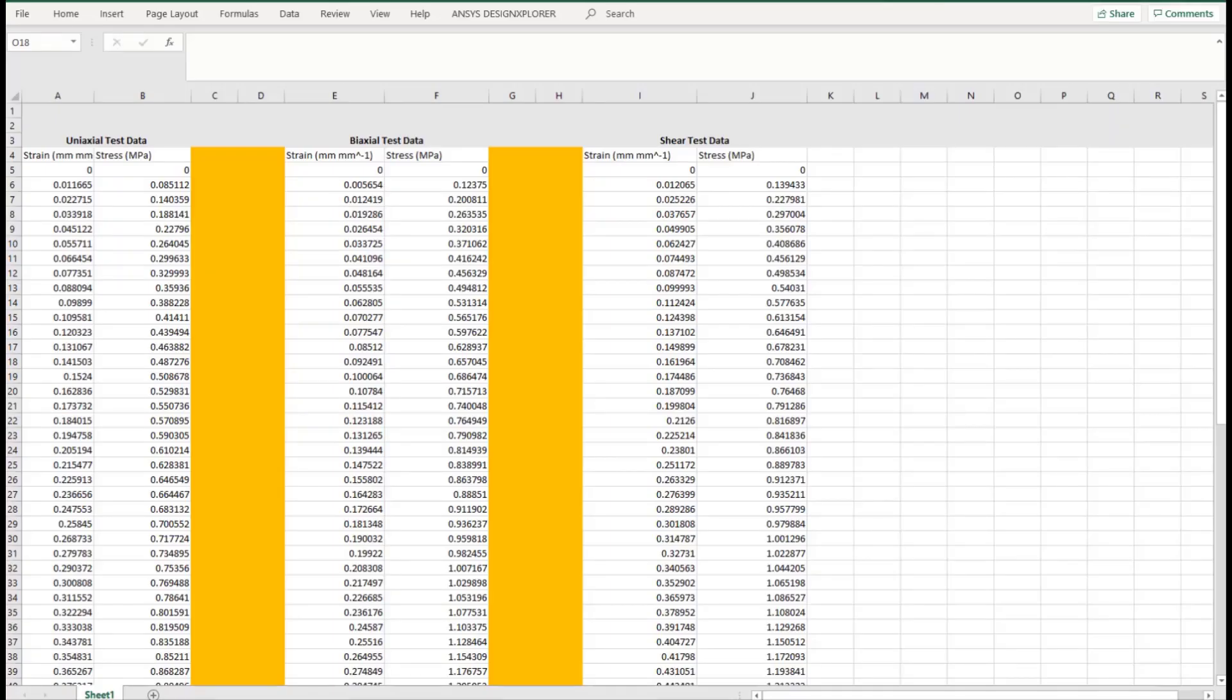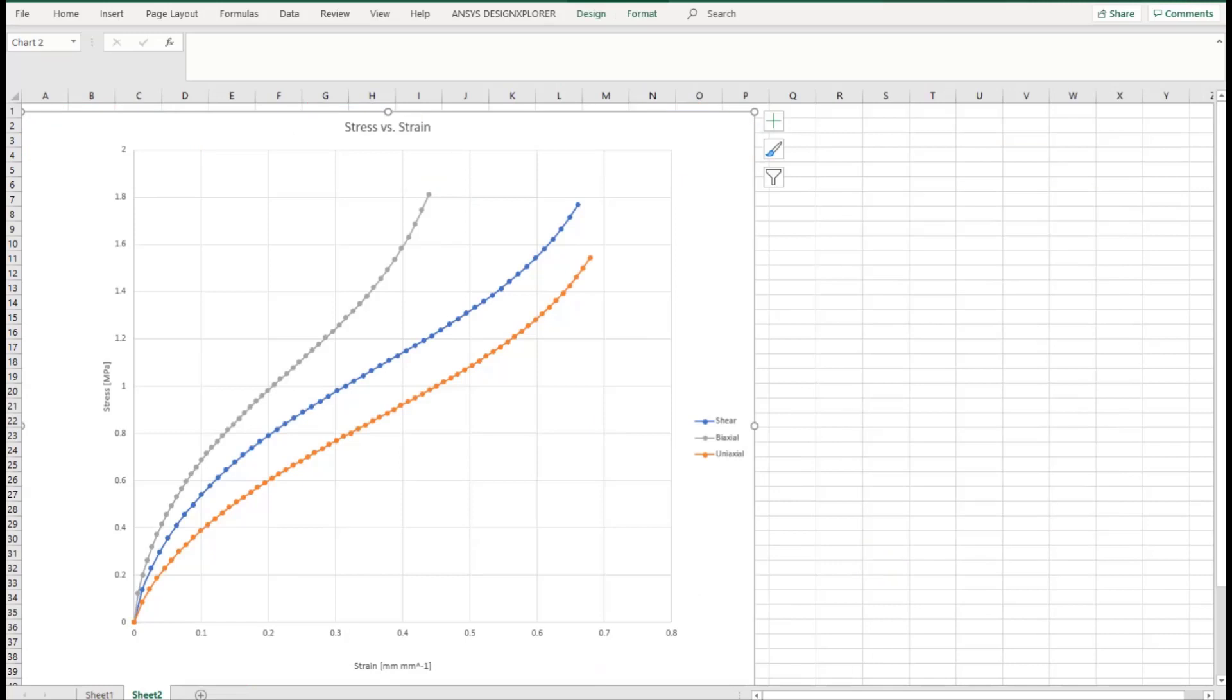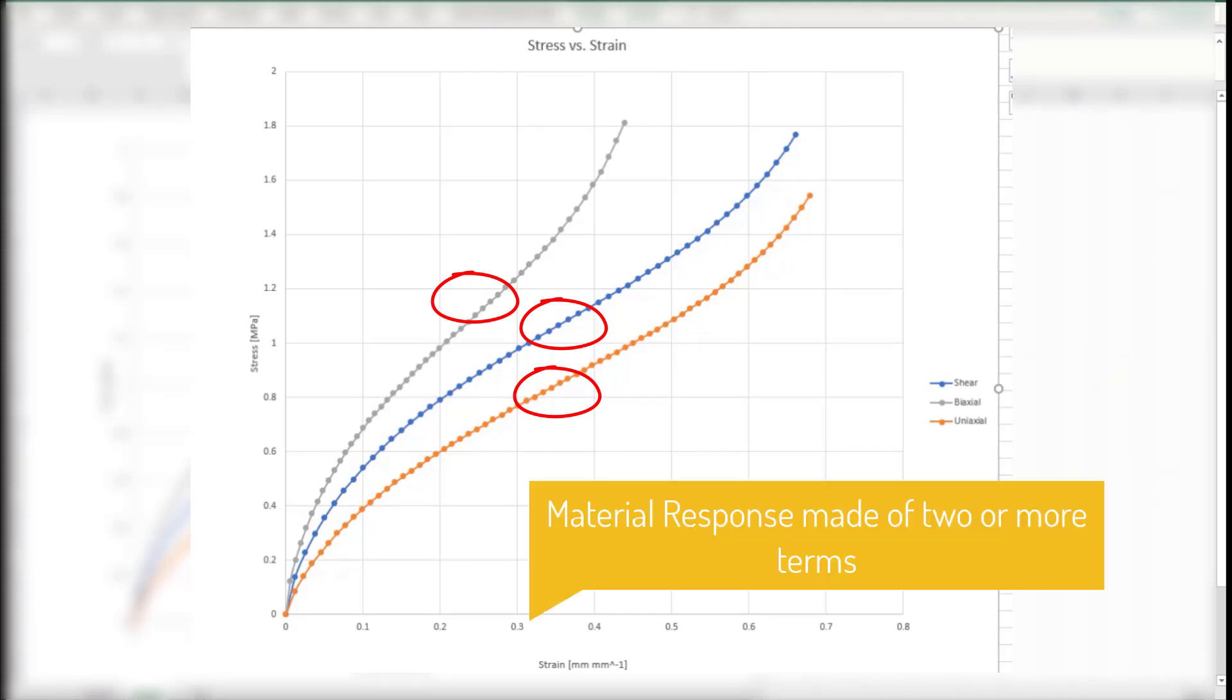Here is the data for an elastomer sample. The data set includes uniaxial tension, biaxial tension and shear. This includes data in three modes of deformation. We don't have any volumetric data, so it's assumed that the material is fully incompressible. Notice that the three responses have a point of inflection in their response. This generally implies that the material response may be made of two or more terms. We'll see how the quality of fit improves as we use models with more terms.